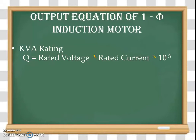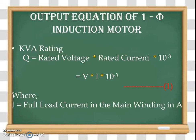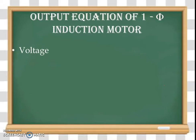The KVA rating of the single-phase induction motor is Q, and it is equal to the product of rated voltage and the rated current multiplied by 10 raised to minus 3 to convert the VA rating into KVA rating. That can be indicated as Q = V × I × 10⁻³, and let us call it equation number one, where I is the full load current in the main winding in amperes.